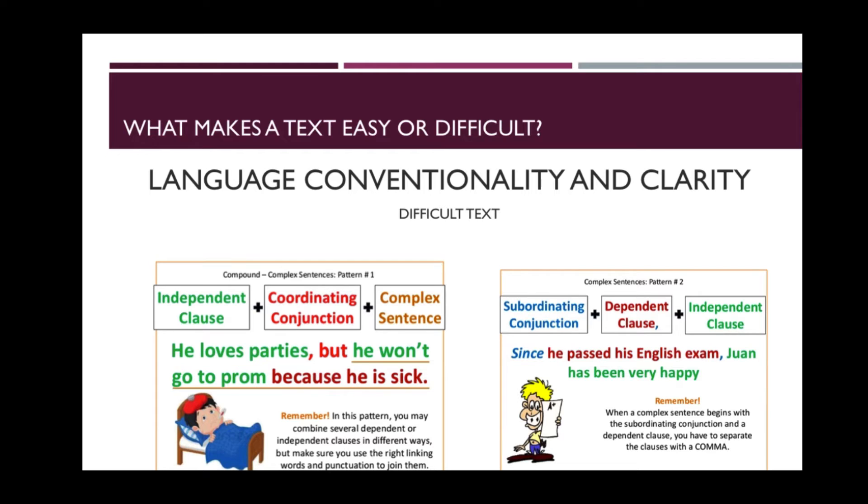Let's look at example two, where you have a subordinating conjunction, a dependent clause, and an independent clause. Since he passed his English exam, Juan has been very happy. The passage uses elevated diction, a common sentence structure, and unfamiliar language.